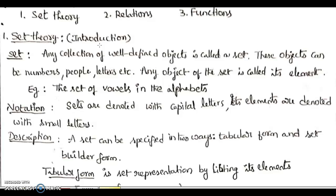Coming to sets, as we all know, any collection of well-defined objects is called a set. These objects may be either numbers, letters, people, etc. The objects of the set are called the elements of the set. For example, we have the set of natural numbers, the set of vowels, the set of people living in a city, and so on.